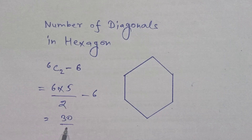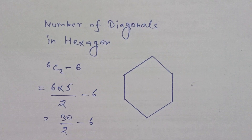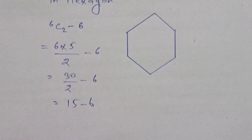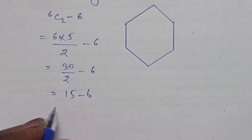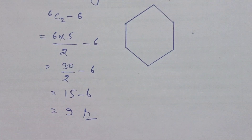So 6C2 = (6×5)/2 = 30/2 = 15. Then 15 minus 6 equals 9. That is the right answer.